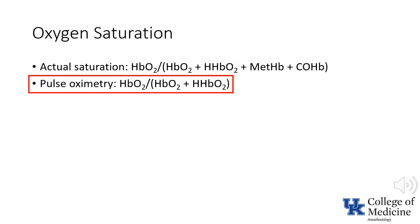In contrast, pulse oximetry — also sometimes described as functional saturation — is oxyhemoglobin saturation divided by the sum of the oxyhemoglobin and deoxygenated, also known as reduced, hemoglobin. In most circumstances, this is a clinically relevant number, since the other forms of hemoglobin are present in very low concentrations.